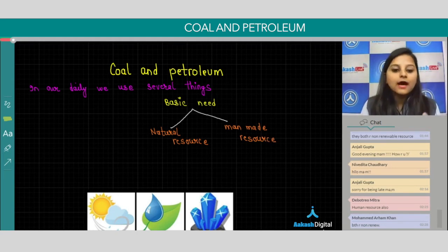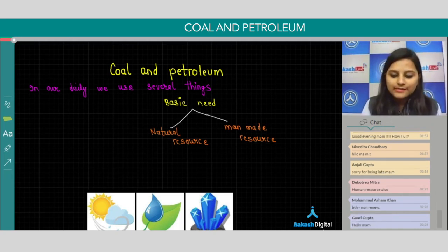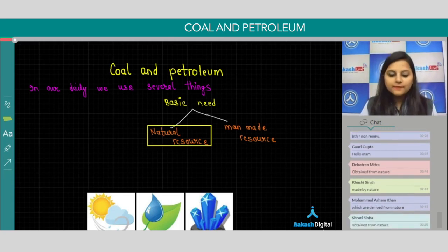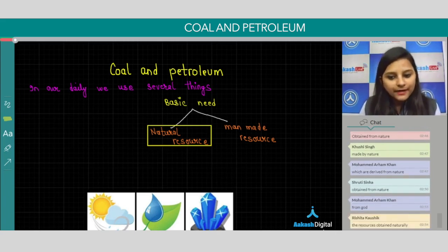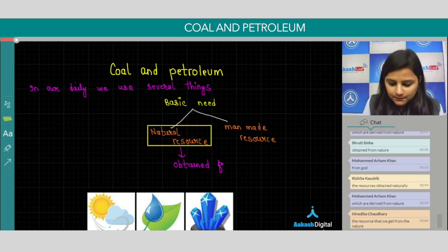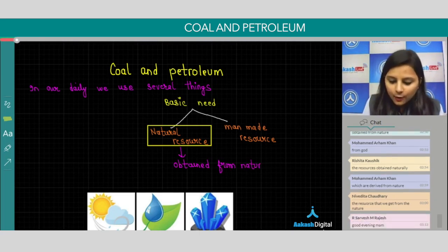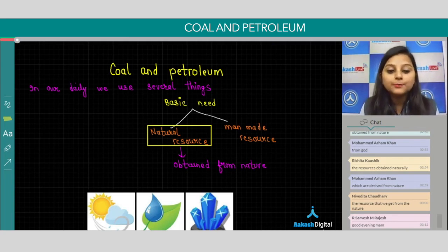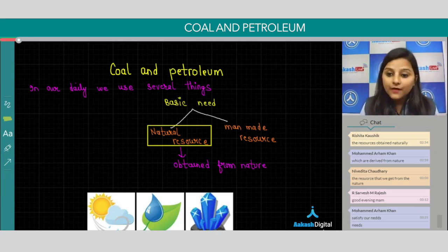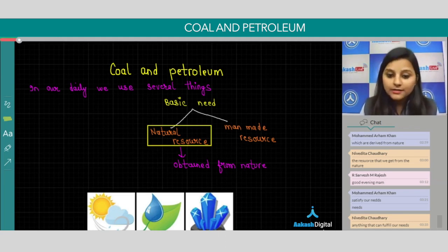In this chapter we'll discuss about natural resources. What do you understand by the term natural resource? These things are obtained from nature. So natural resources are those things which give benefit, satisfy our need, and are obtained from nature.